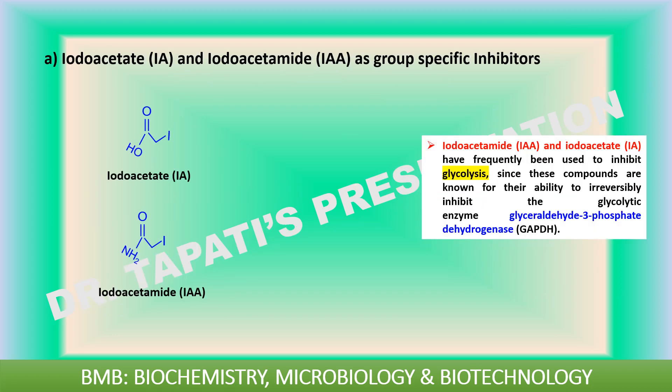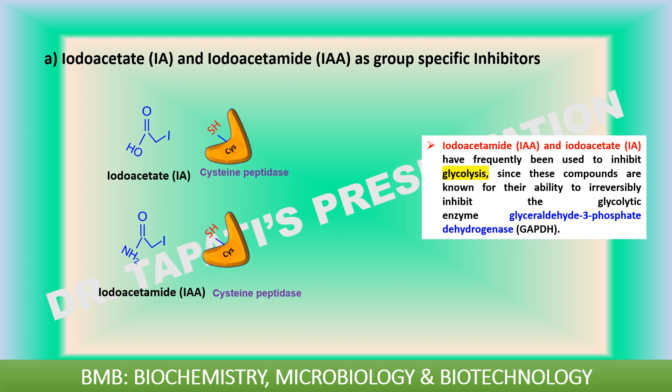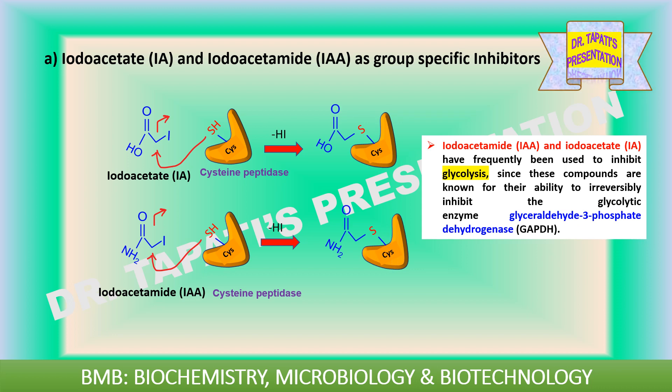Iodoacetate and iodoacetamide are irreversible inhibitors of all cysteine peptidases. Inhibition occurs due to alkylation of the catalytic cysteine residue. They bind covalently with the thiol group of cysteine so the protein cannot form disulfide bonds. They have frequently been used to inhibit glycolysis because these compounds irreversibly inhibit the glycolytic enzyme glyceraldehyde 3-phosphate dehydrogenase.